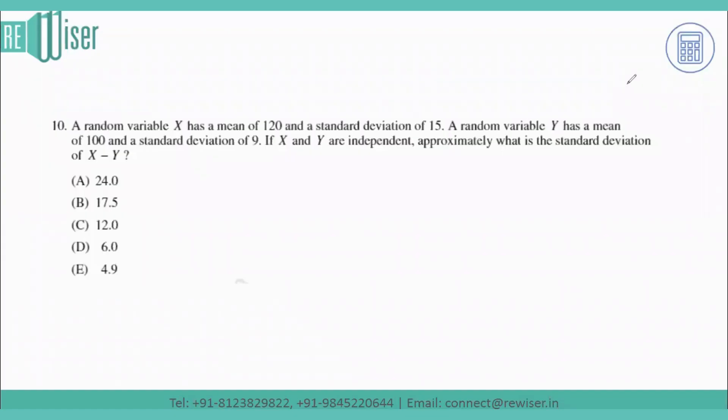Hello students. The question says a random variable X has a mean of 120 and a standard deviation of 15. Another random variable Y has a mean of 100 and a standard deviation of 9. If X and Y are independent, approximately what is the standard deviation of X minus Y?